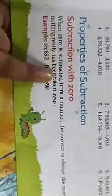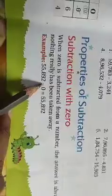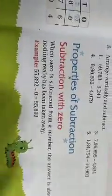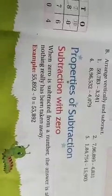The first property is subtraction with zero, the zero property of subtraction. When zero is subtracted from a number, the answer is always the number itself, as nothing really has been taken away. For example, 55,892 minus zero. When we take away zero, it means we are not taking anything from the number, so the answer will be the number itself.